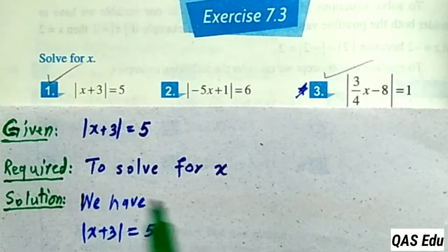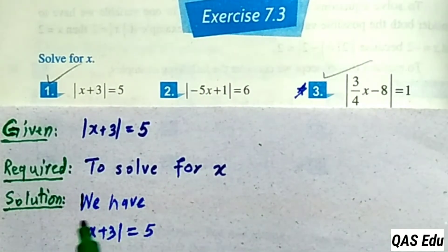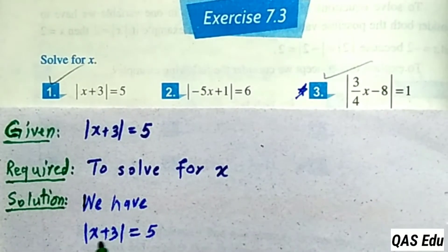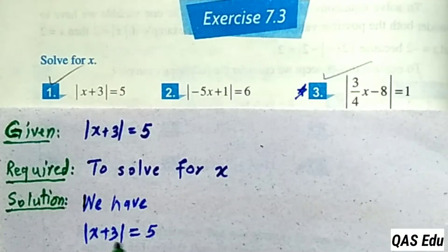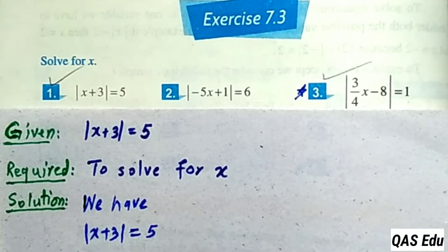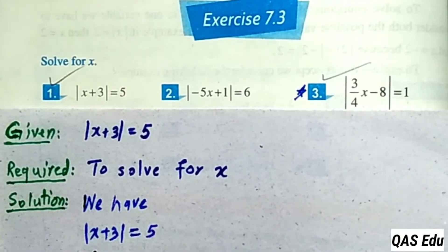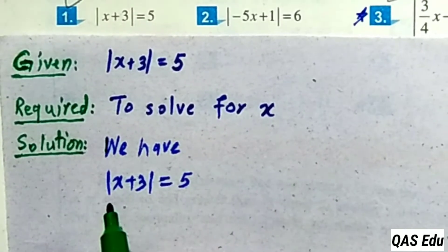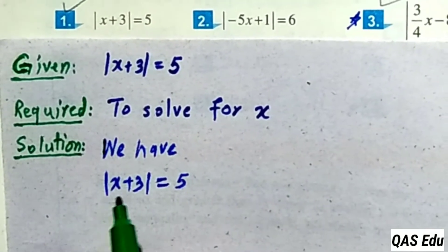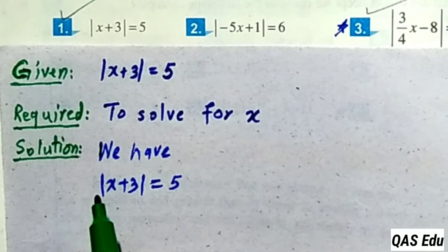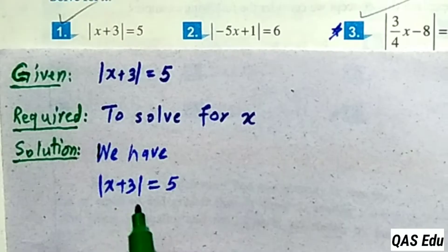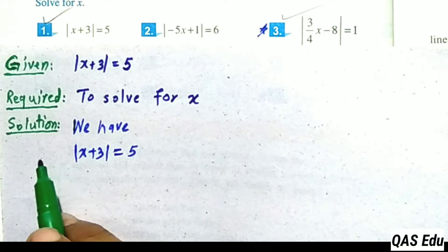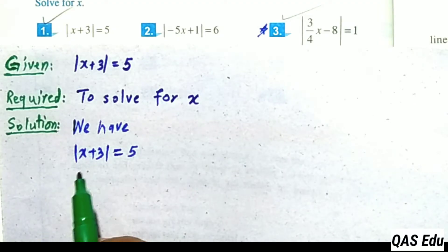We have to solve for x. We have the absolute value of x plus 3 is equal to 5. We have two possibilities: either x plus 3 is equal to 5, or minus of x plus 3 is equal to 5. Multiply both sides by minus 1.